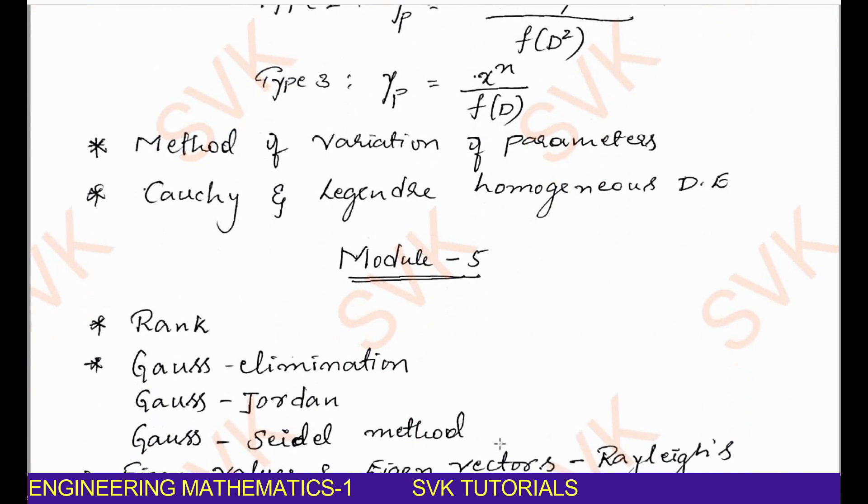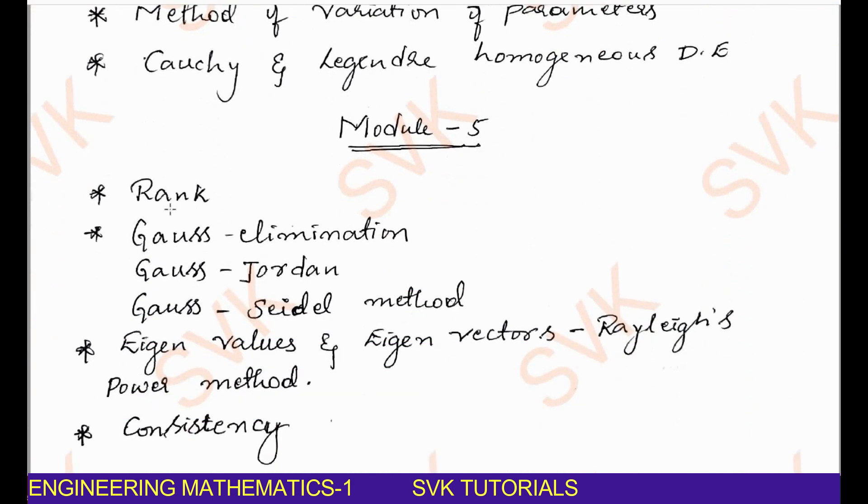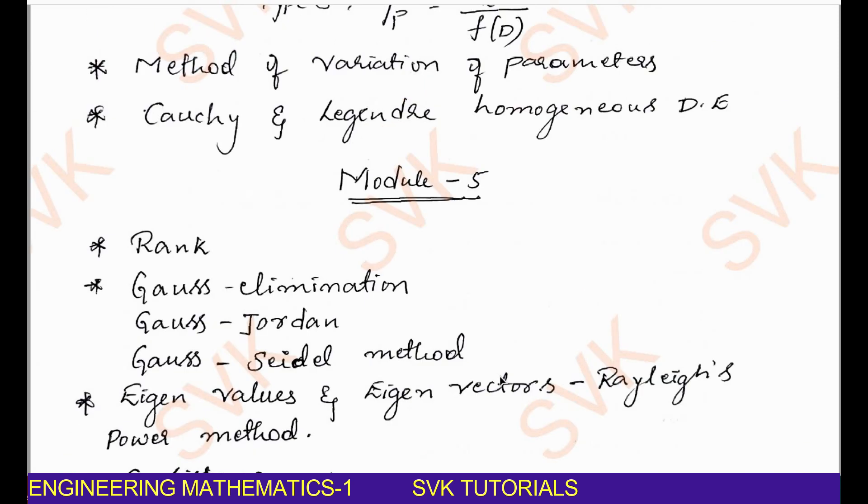Moving on to module 5, which is an easiest module, you can study rank, Gauss elimination, Gauss-Jordan, Gauss-Seidel method along with eigenvalues and eigenvectors by using Rayleigh's power method. And you can have a choice, you can study consistency or you can leave the consistency. If you study these topics that is rank, Gauss elimination, Gauss-Jordan, Gauss-Seidel and eigenvalue and eigenvector by using Rayleigh's power method, definitely you can score 20 out of 20 in this module. Without any doubts, you can score 20 out of 20. This is the pattern I have chosen for your final examination for outcome as passing marks.